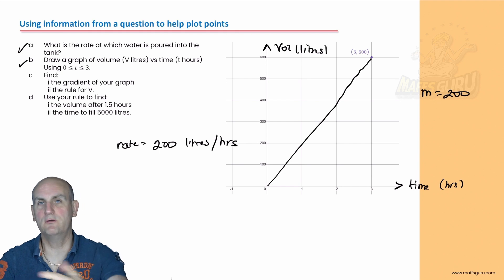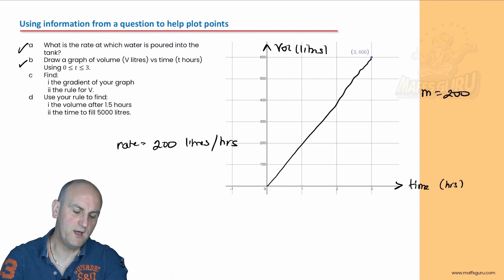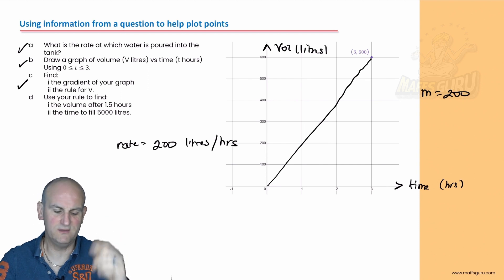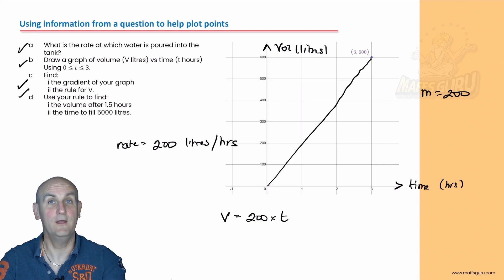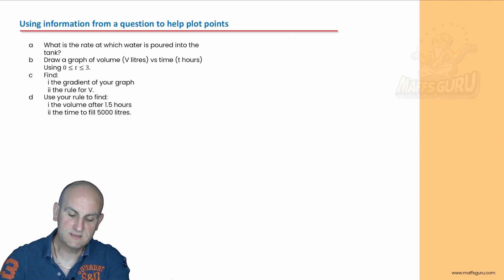Now, you'll notice that part B then says draw a graph. Why have I got to do that second? It makes so much more sense to do it first. So I did it first. Even if it was a little pencil sketch on my diagram, in my margin or whatever else, do it. Makes life so much easier. Find the gradient of the graph. Already done it. Thank you very much. The rule for V. We've done that. If you remember, my V is equal to 200 times T. My volume is 200 times T from my previous slide. Now we're going to use that equation. Most questions will then ask you to use it.